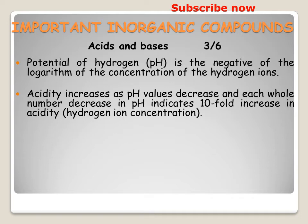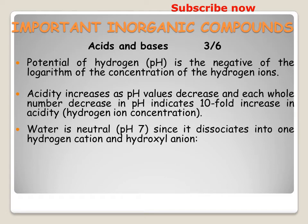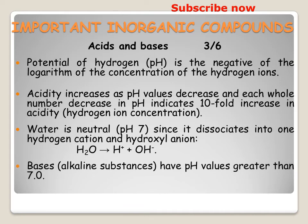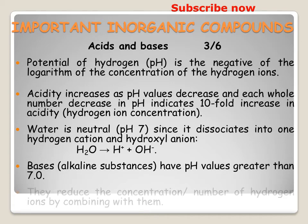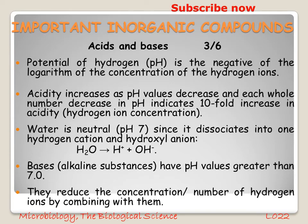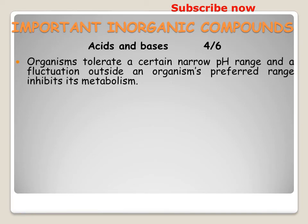Water is neutral at pH 7 since it dissociates into one hydrogen cation and one hydroxyl anion. Alkaline substances have pH values greater than 7. They reduce the concentration of hydrogen ions by combining with them.